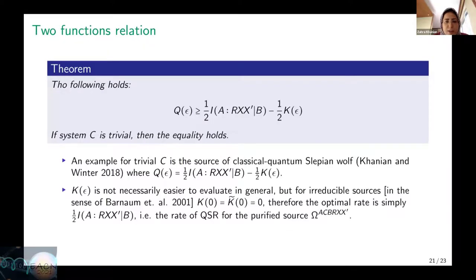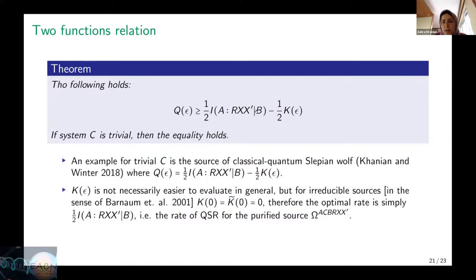The main relation between these two functions is that q(ε) is lower bounded by the mutual information minus one half of k(ε). This mutual information is the rate of conventional quantum state redistribution, involving system A to be compressed and all reference systems given side information B at the decoder. When system C of the source is trivial, we have equality here.